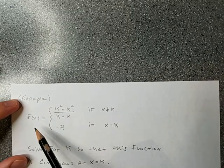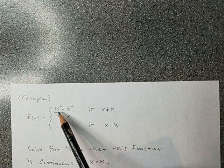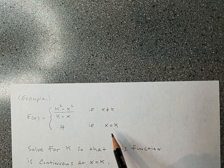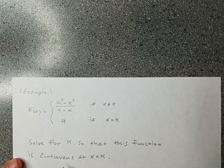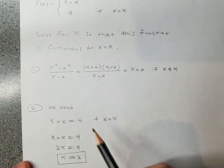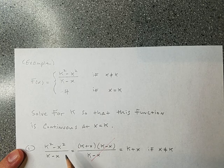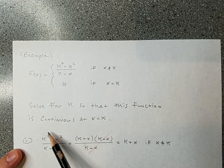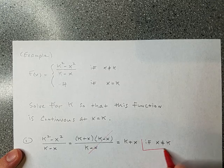Now let's talk about how to do the main problem. Here's this function where the only numbers I see are the exponent, the 4, and the variable k. The function is (k²−x²)/(k−x) when x is not k, and y equals 4 when x equals k. I want to solve for the unknown number k so that this function is continuous at x equals k. This is actually really easy — it just takes three steps.